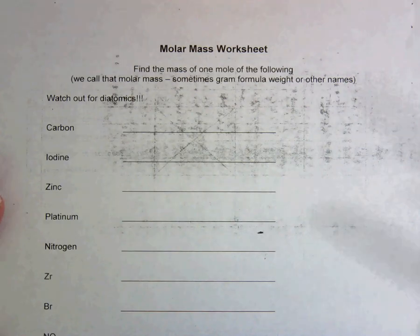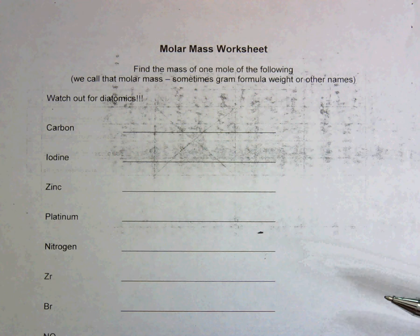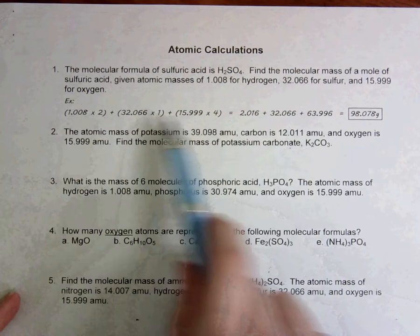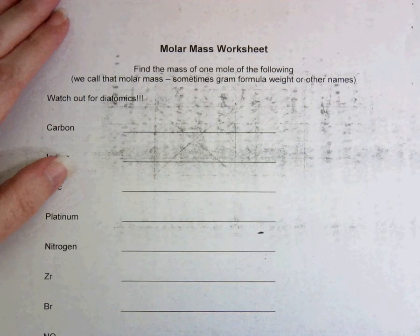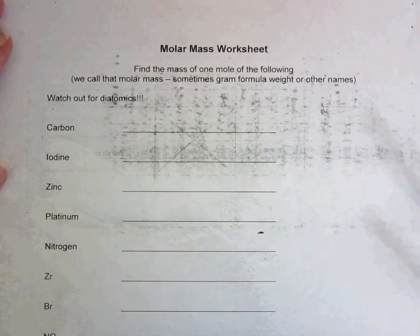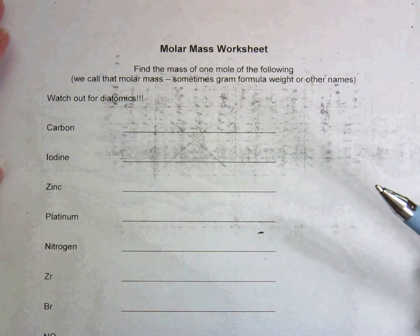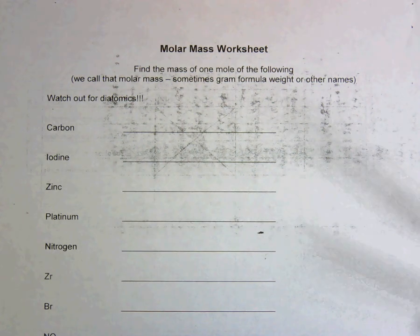Molar mass worksheet. You're going to do the same thing that you were just doing on the worksheet prior, which was adding up the masses of those compounds, but some of these are asking you just for the mass of one element. So if it's asking you for the mass of just one element, then you're just going to look it up on the periodic table.